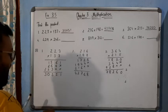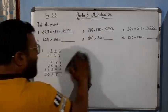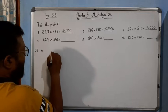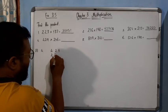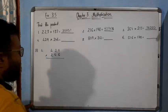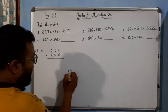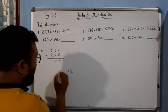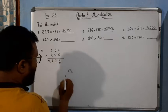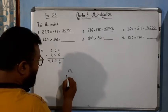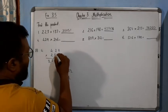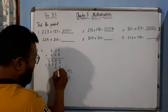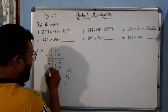Now come to question number 4: 429 multiplied by 266. 6 times 9 is 54, write 4 carry 5. 6 times 2 is 12, 13, 14, 15, 17. Write 7, carry 1. 6 times 4 is 24, 25. Cross. Then 6 times 9 is 54, write 4 carry 5. 6 times 2 is 12, 17. Write 7, carry 1. 6 times 4 is 24, plus 1 is 25.